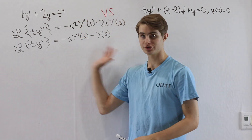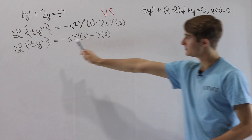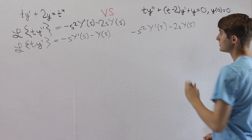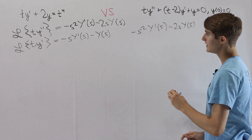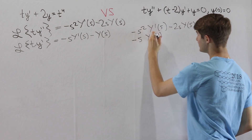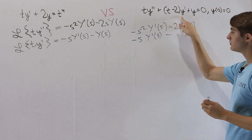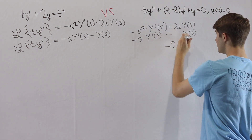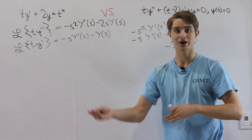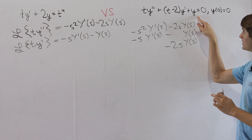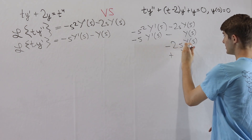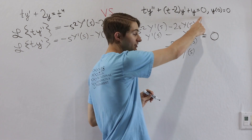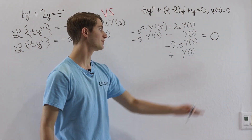Stepping back to write the full transformed equation: the Laplace transform of ty double prime gives negative s squared Y prime of s minus 2s Y of s; adding the transform of ty prime gives minus s Y prime of s minus Y of s; the transform of minus 2y prime gives minus 2s Y of s (with y of 0 equal to zero dropping out); and the transform of y is just Y of s. Setting the whole equation equal to zero.